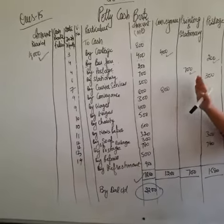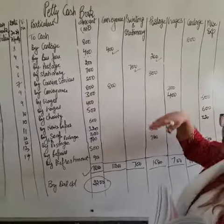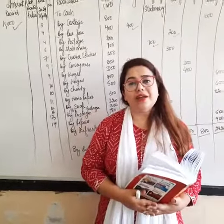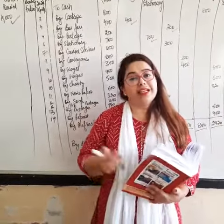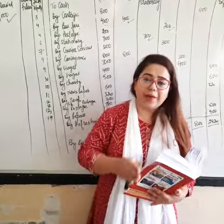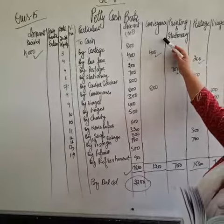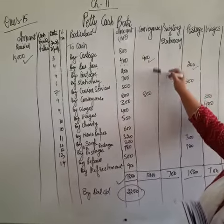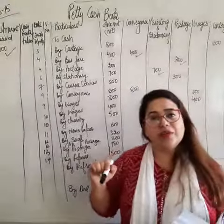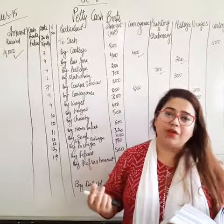You will see how I have maintained separate columns for expenses. The expenses which are of repetitive nature, we have to record them in a separate column. For example, cartage is occurring 2 times — once here and once there — so I have maintained a separate column for it.